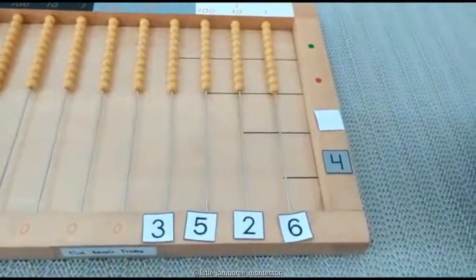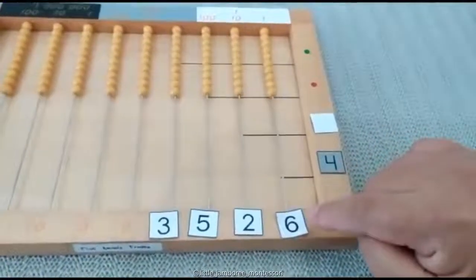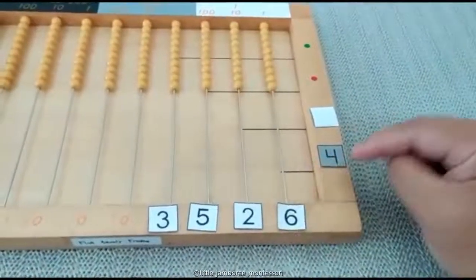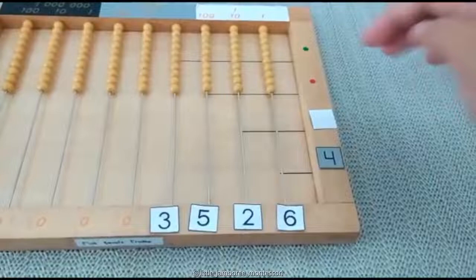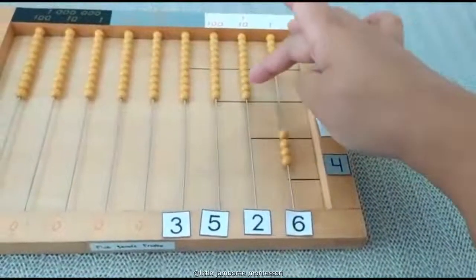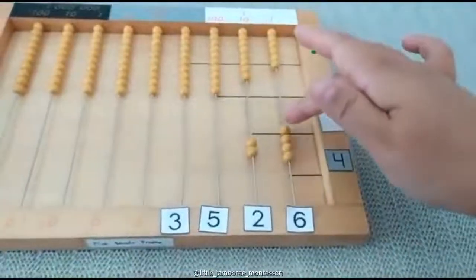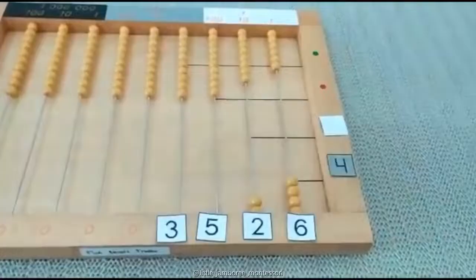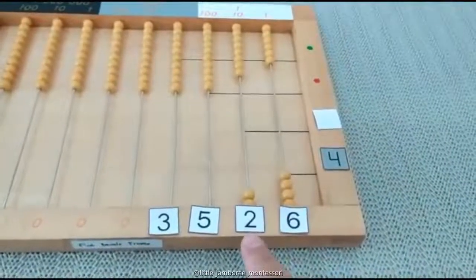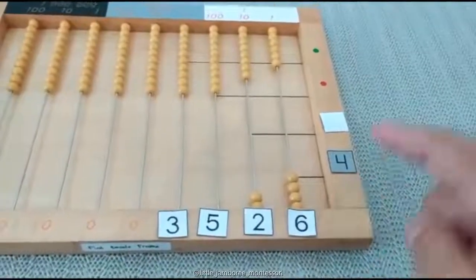Okay, so let's start. Six units multiplied by four units equals 24 - four units and two tens. Next, two tens multiplied by four units equals eight.